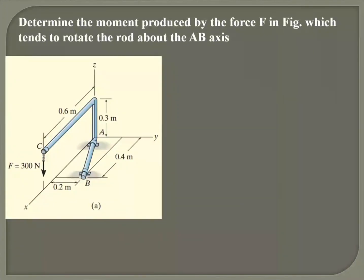Which tends to rotate the rod about the AB axis. So your axis is here, that's your axis. So you need to find the moment created by force F on the axis AB.